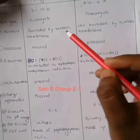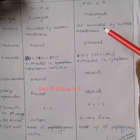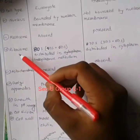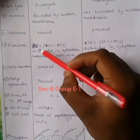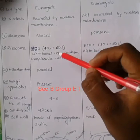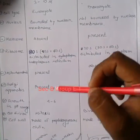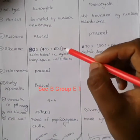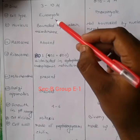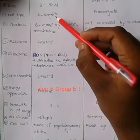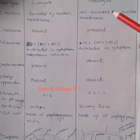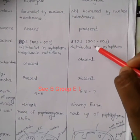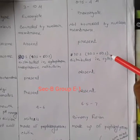Mesosome is absent in the case of fungi, but in bacteria, mesosome is present. Regarding ribosomes, the ribosome of the fungal cell is 80S — that is why it is the eukaryotic type cell — and in bacteria, the ribosome is 70S, which is 30S plus 50S.